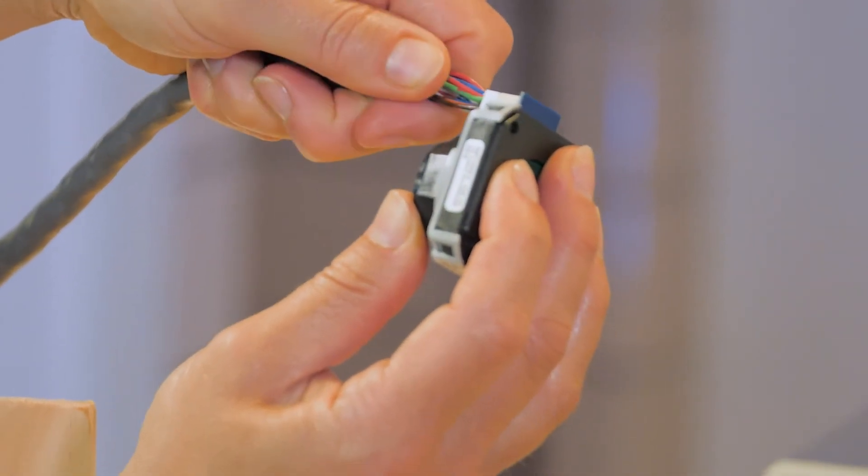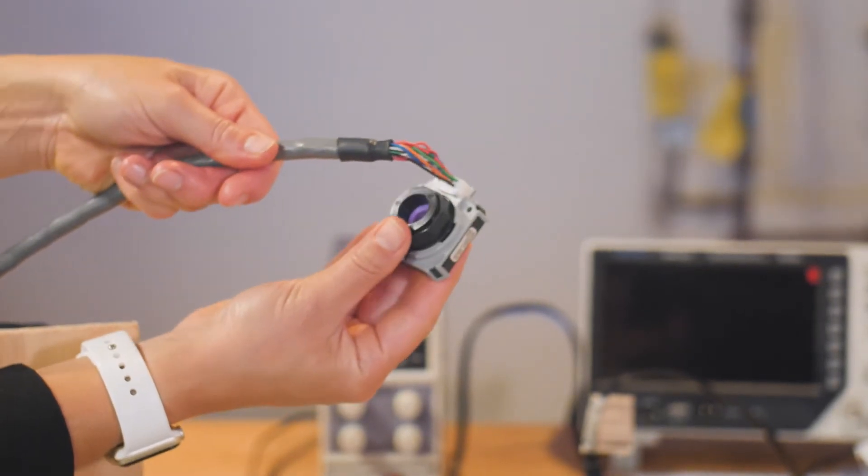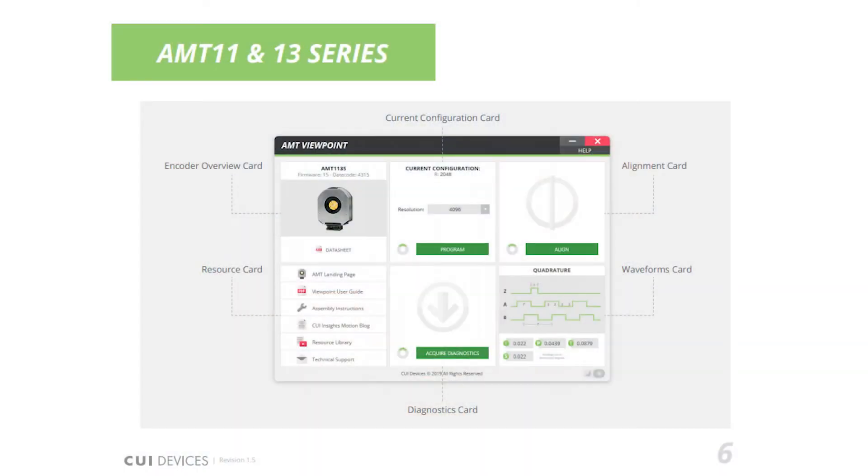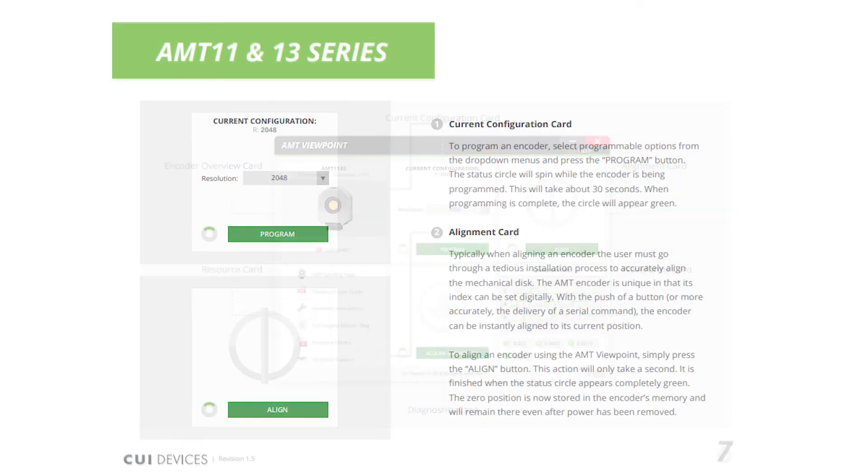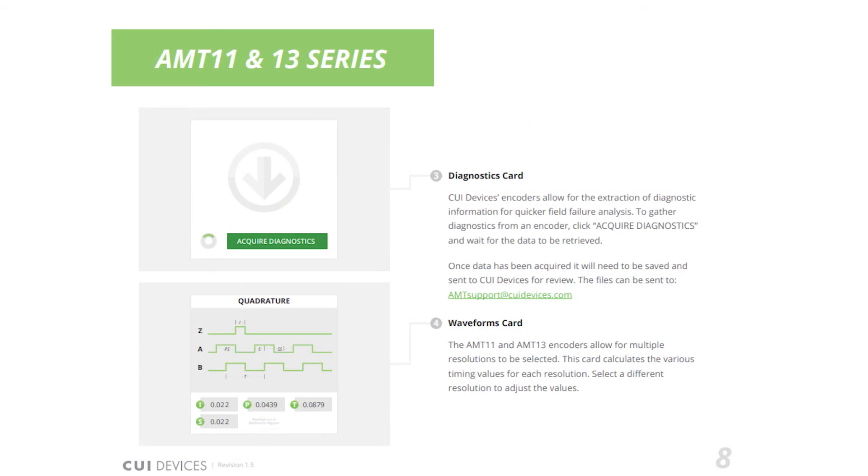All incremental encoders from CUI Devices have 22 configurable resolutions from 48 to 4,096 pulses per revolution, which can be quickly adjusted via CUI Device's software package called AMT Viewpoint. The encoders come out of the box with a default resolution set at 2,048 PPR, which is what we're using today.